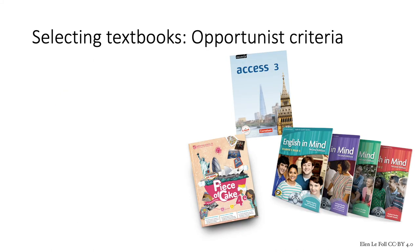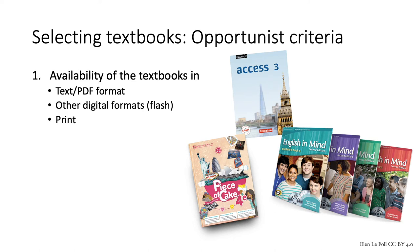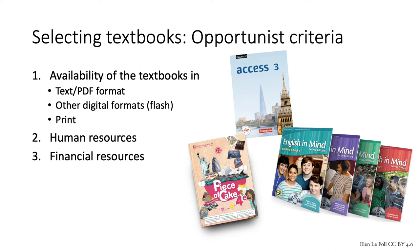We may also consider different formats — some textbooks are now entirely digital, and this might have an impact on the language input. Some textbook series and publishers have specific pedagogical approaches, and we may want a range of those represented in our textbook corpus for balance. In addition to these criteria, there are also opportunistic criteria. For instance, are the textbooks already available in text format? That's rather rare, but may be possible if you have direct access from the publishers. Or in PDF format, which is already a very good format to work with. Or in some other digital format that can be automatically converted to text — for instance, some textbooks are available as flash files to be used on smart boards. Or are the textbooks only available in print, in which case they will have to be manually scanned page by page, requiring human resources. Financial resources are also a necessary constraint.